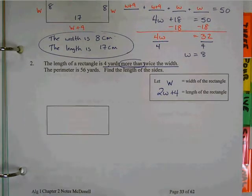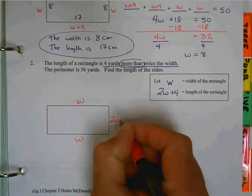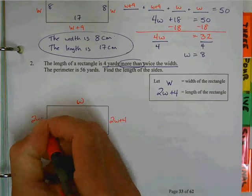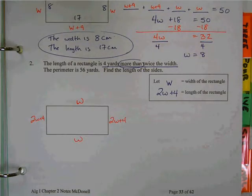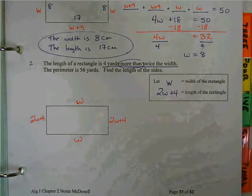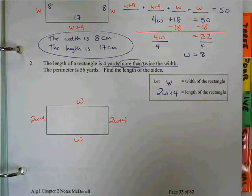Now we label our sides: W, W, 2W plus 4, 2W plus 4. Now, notice how I labeled my sides. Are you required to make the width the skinny one? No, and I did this intentionally because sometimes we get into this mindset that the width has to be the small one. In this case, it will be, but I didn't label it that way.